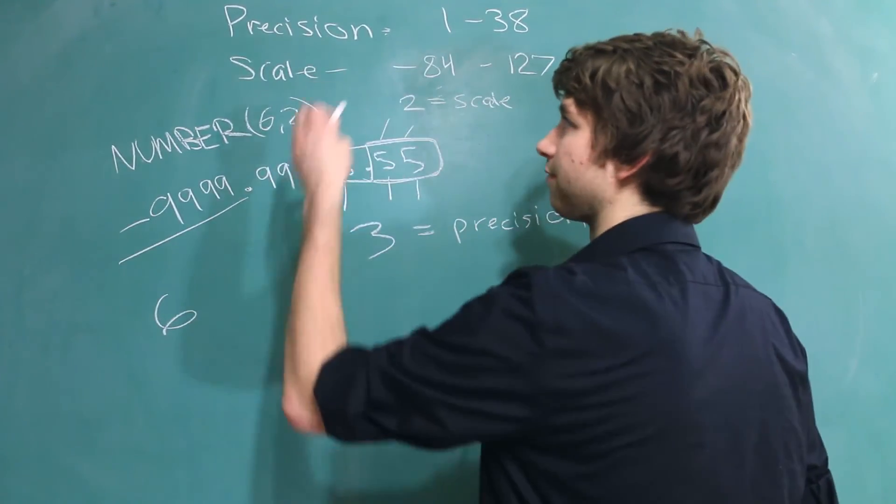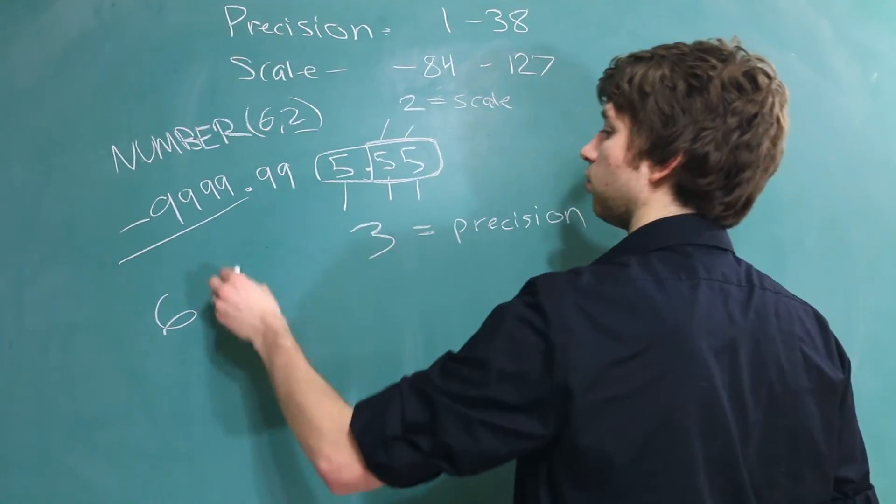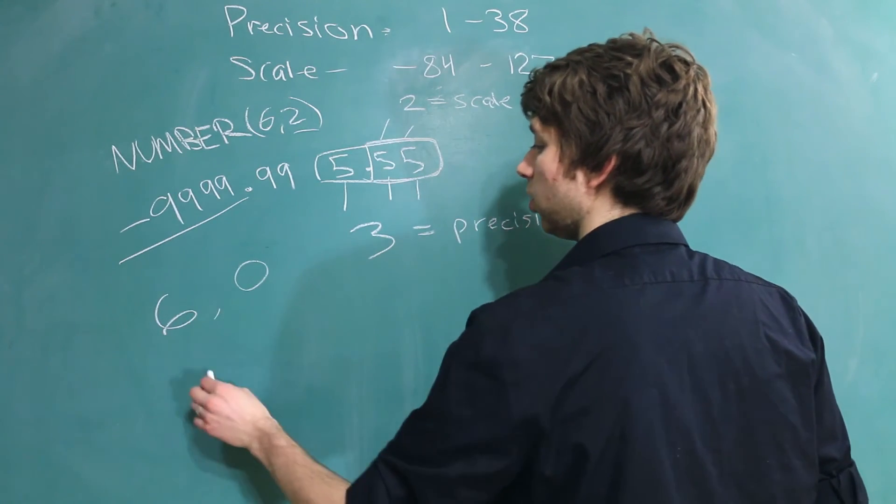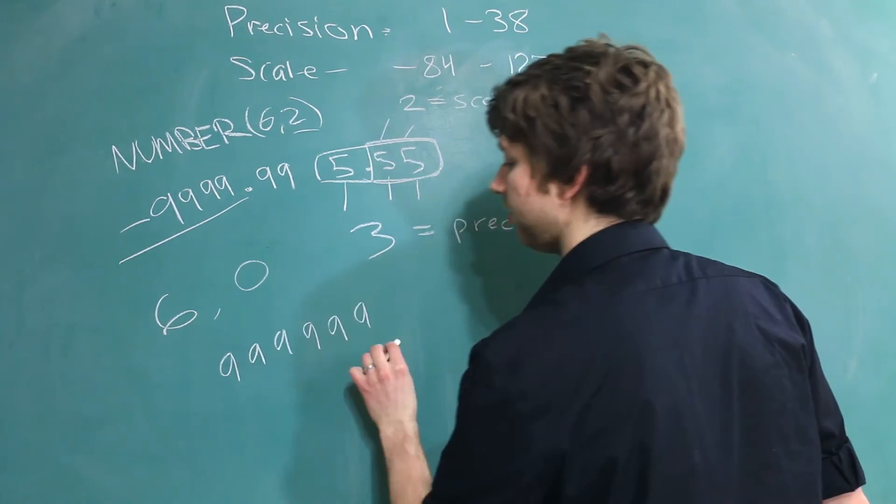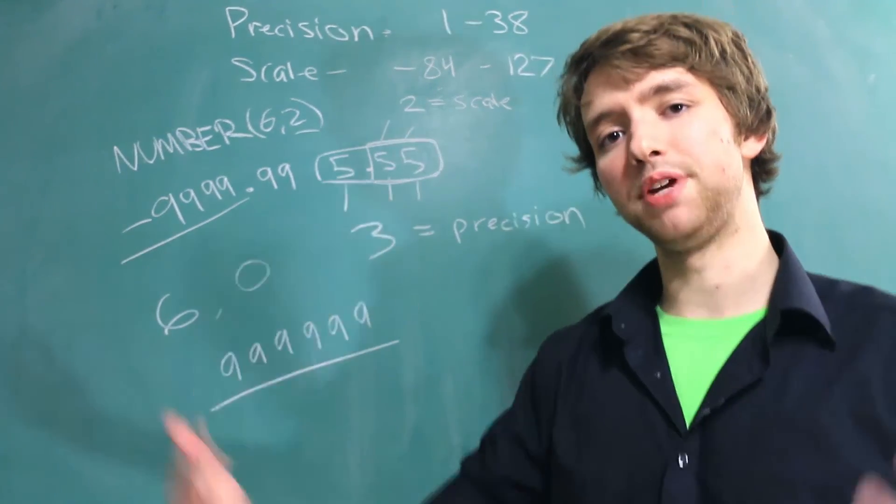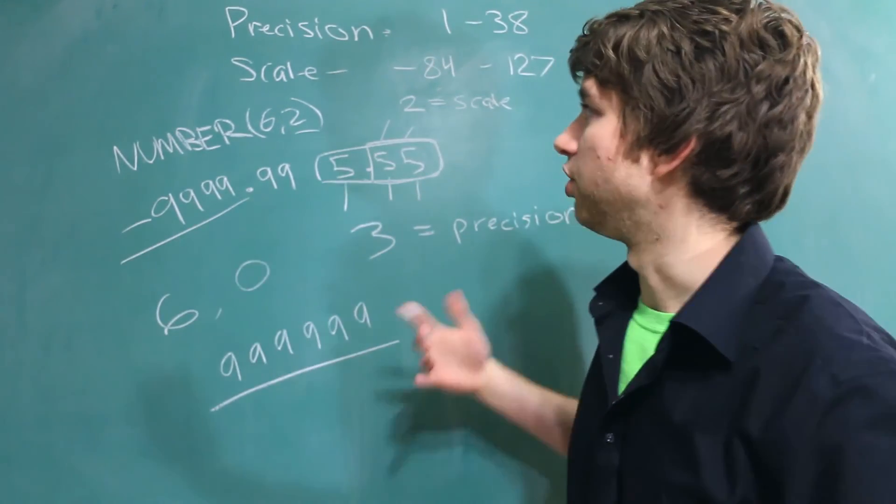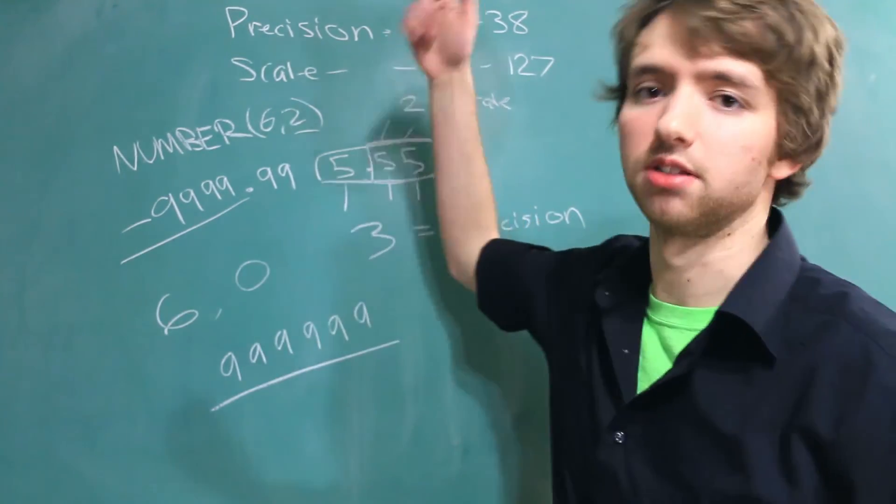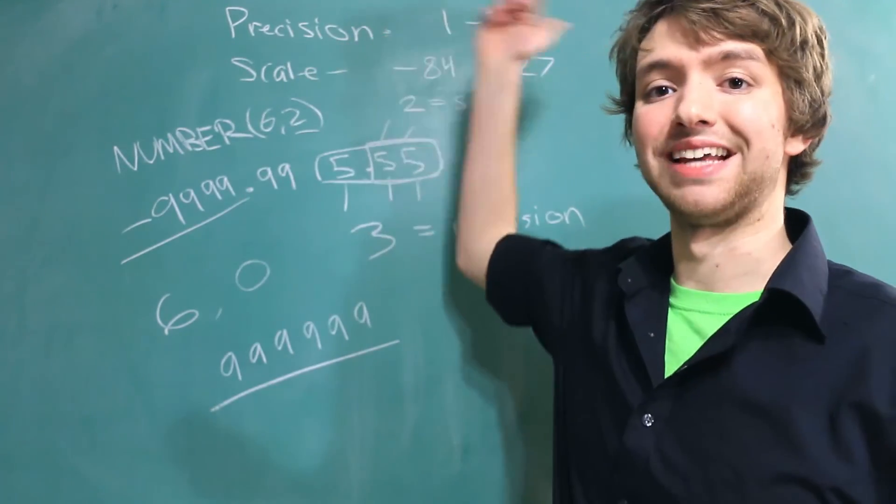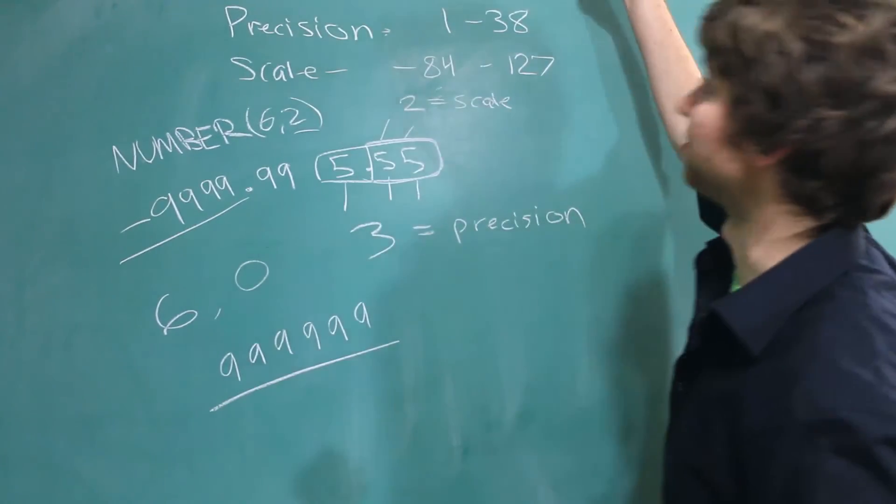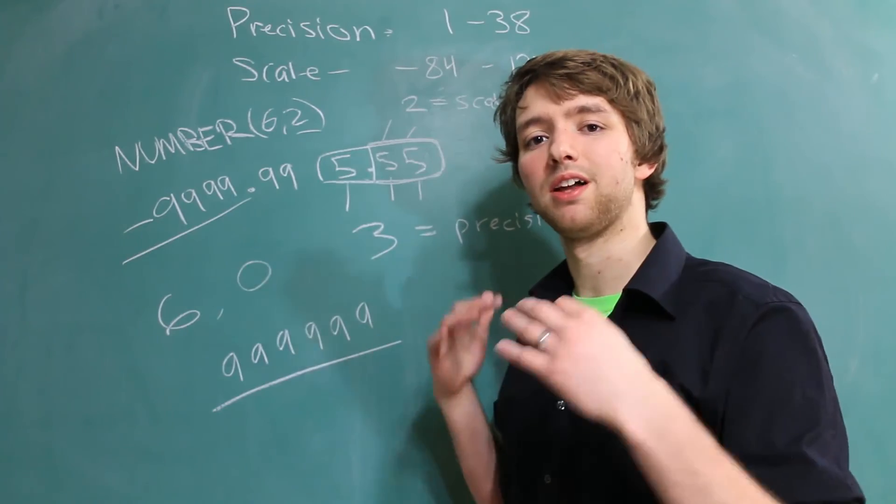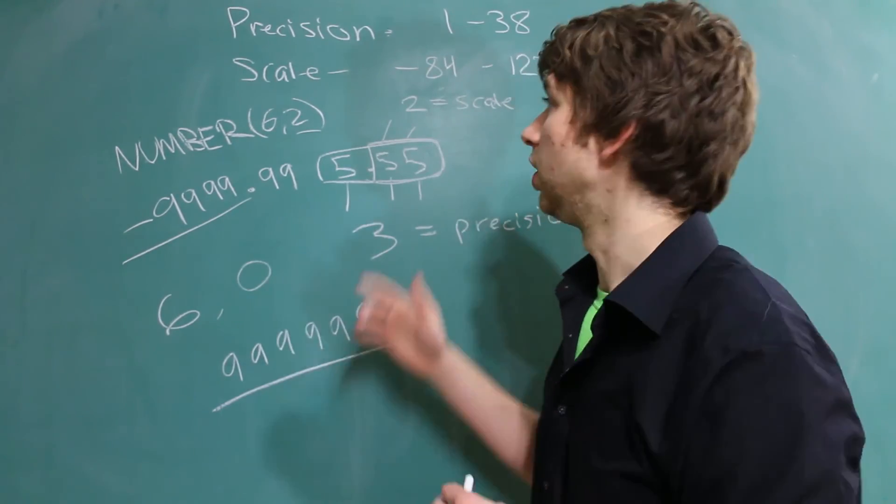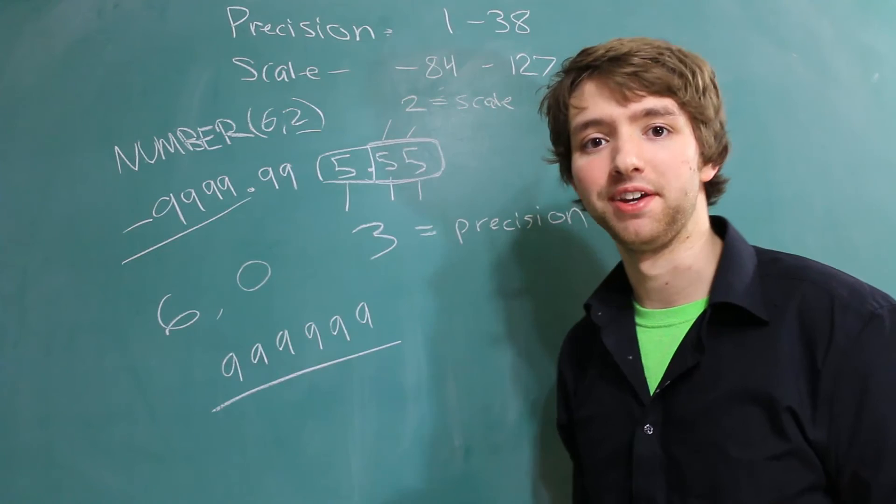So if we had 6 for the precision and the scale was 0, we could store this. And this would allow for a much larger number. So if a bigger number is what you want, then you are going to want to keep the scale as low as possible and the precision as high as possible. I think you can only store up to 38. But if you want a lot of numbers after the decimal point, you can make the scale very big and the precision very big.